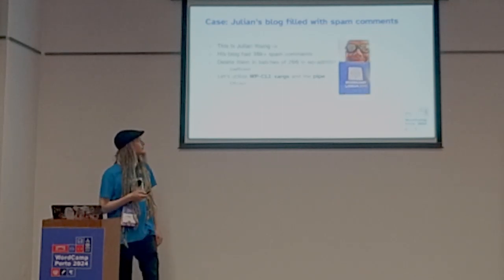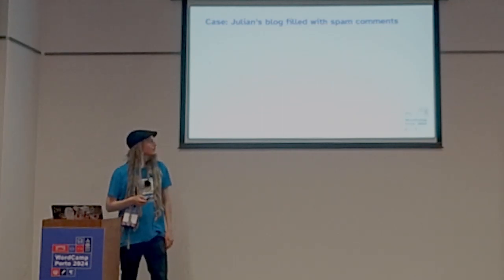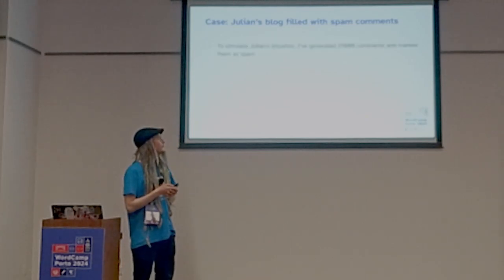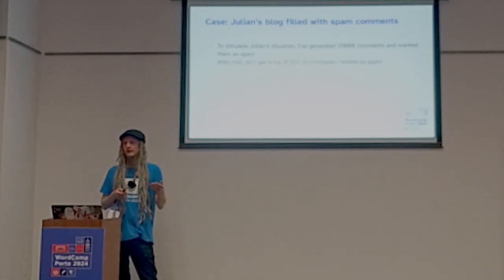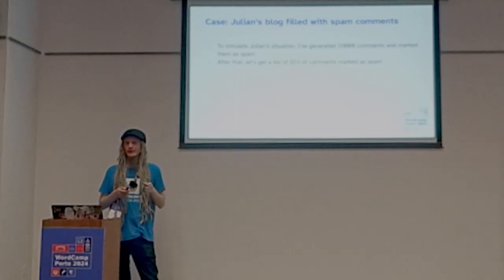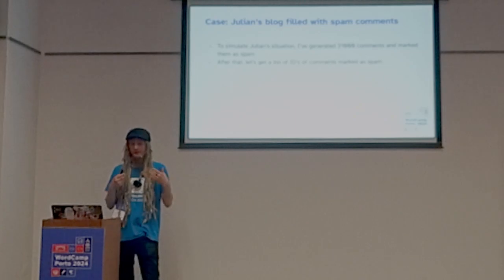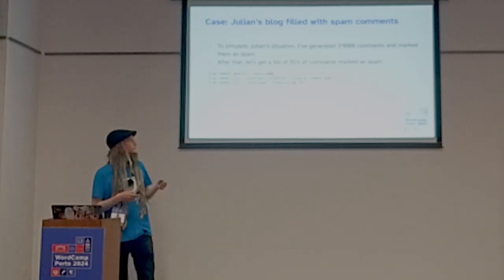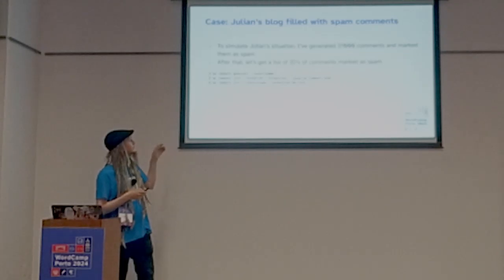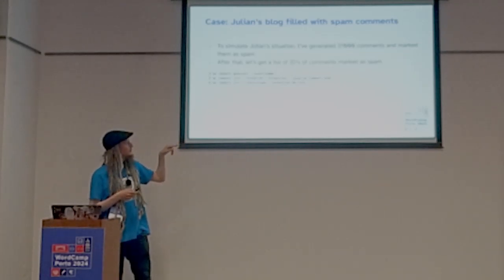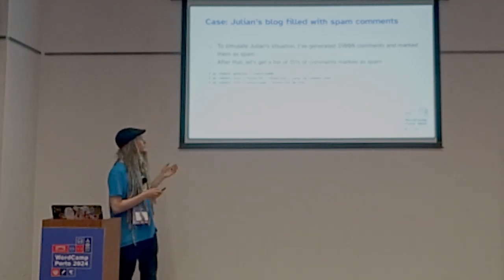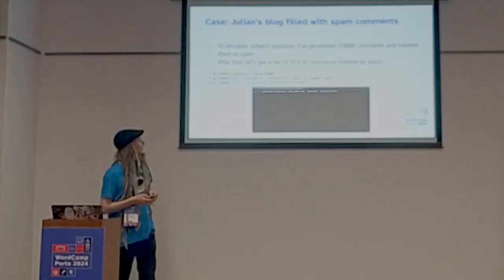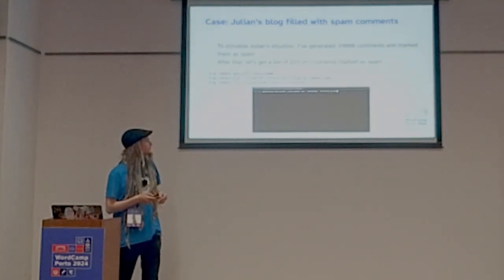This is, of course, the efficient approach. To simulate this, I've generated 31,000 comments and marked them as spam. Then we can get a list of the ID numbers of those spam comments and do whatever we want with them — in this case, delete them. Here are the commands to achieve this: first we generate, then we pass them to xargs, which can then run wp comment spam. We're going to use a similar kind of command in the next section.